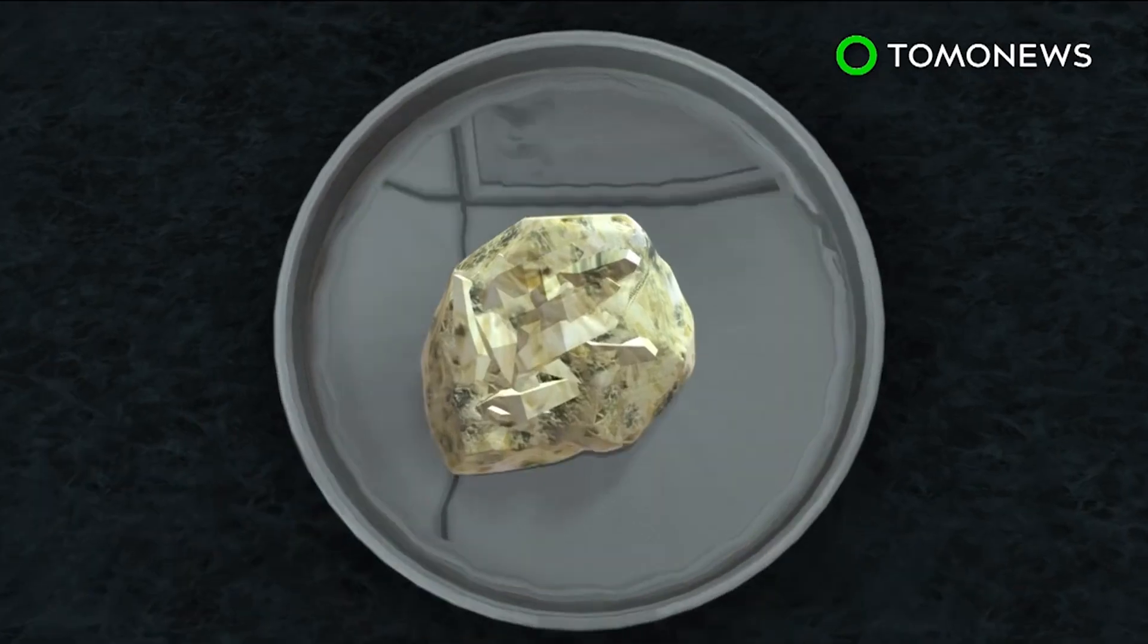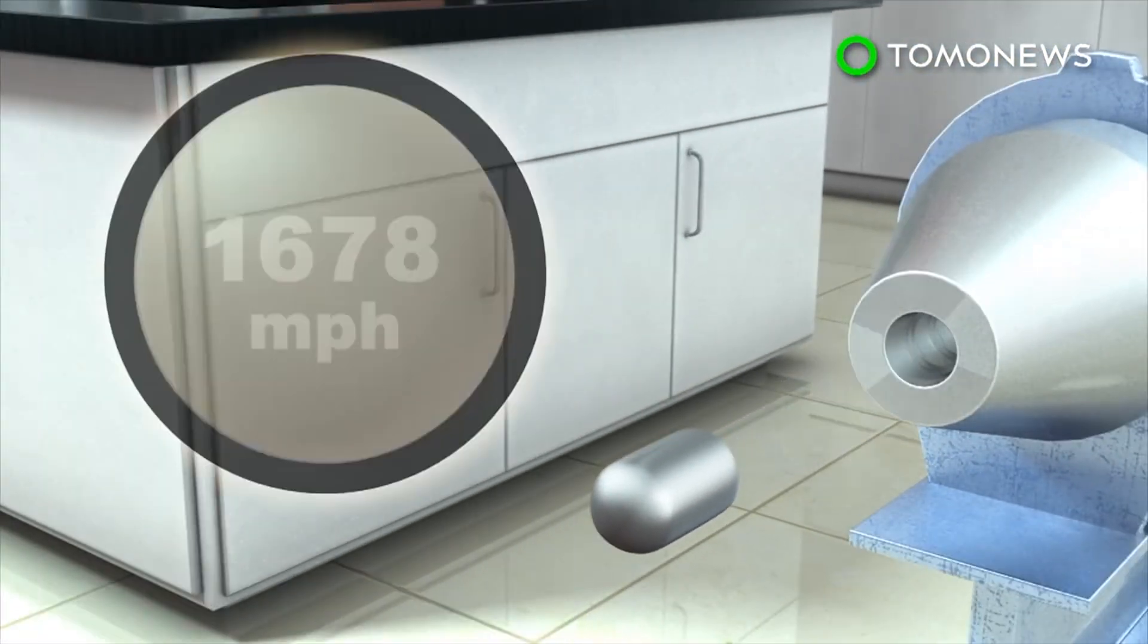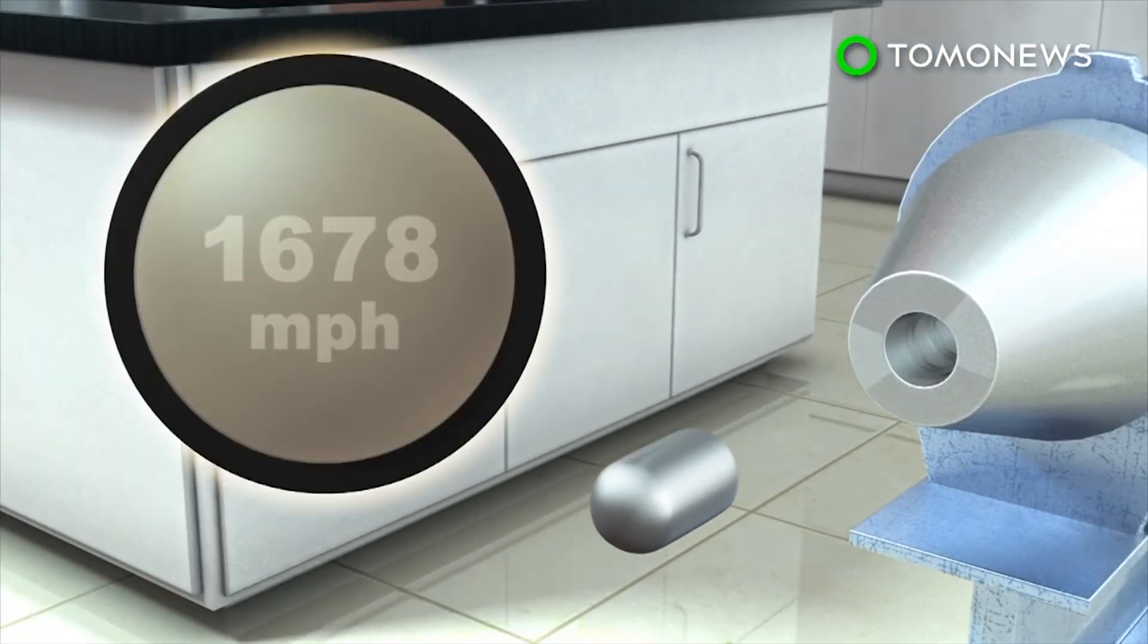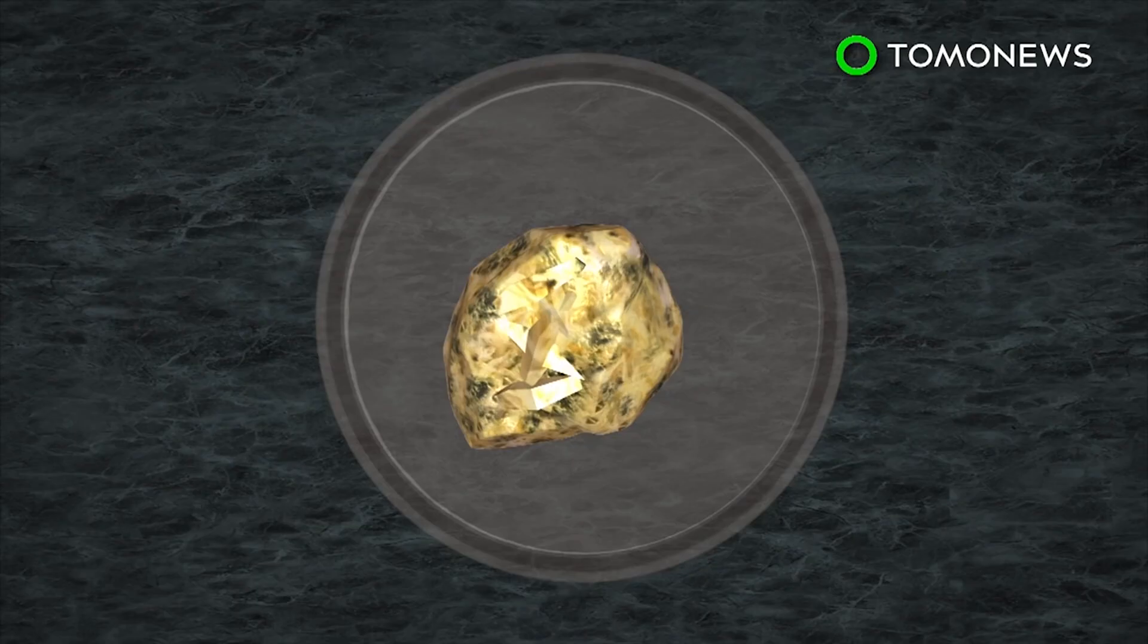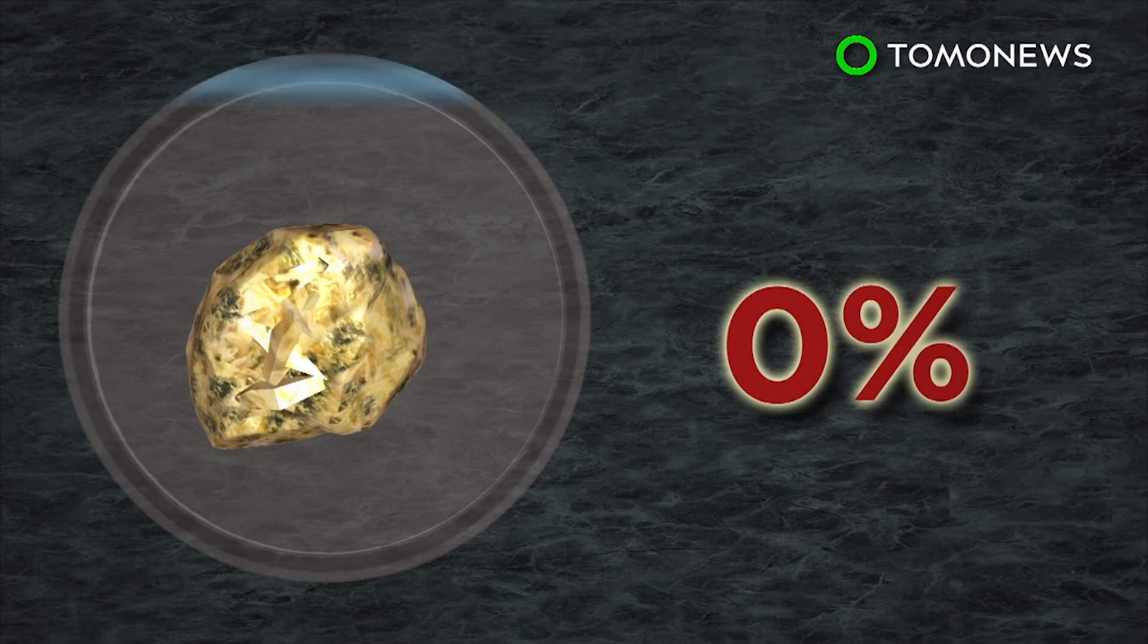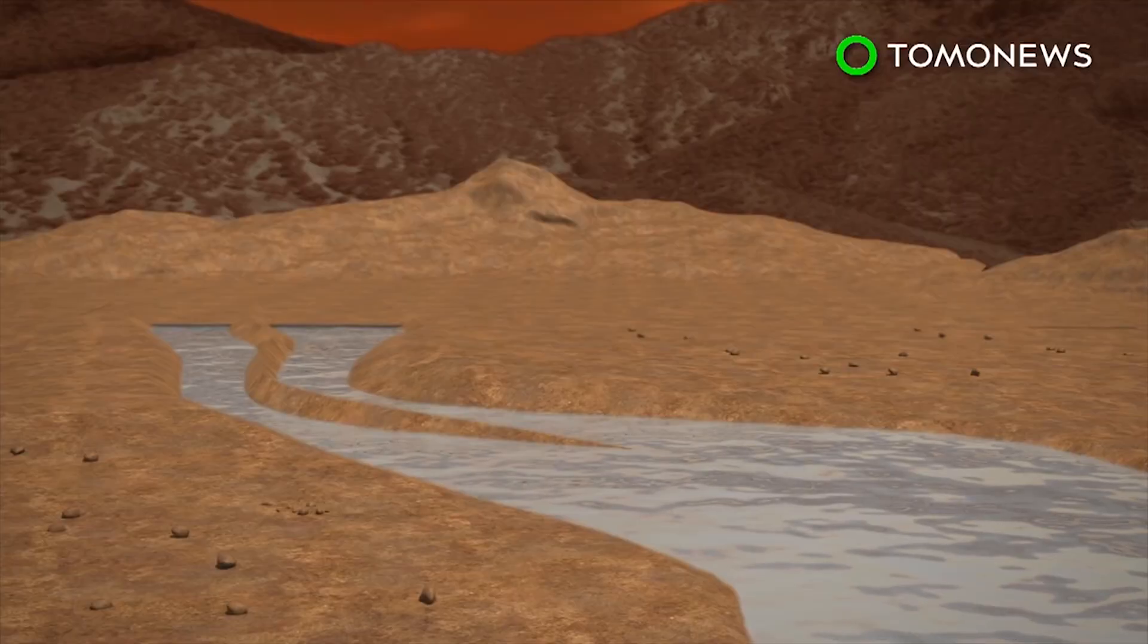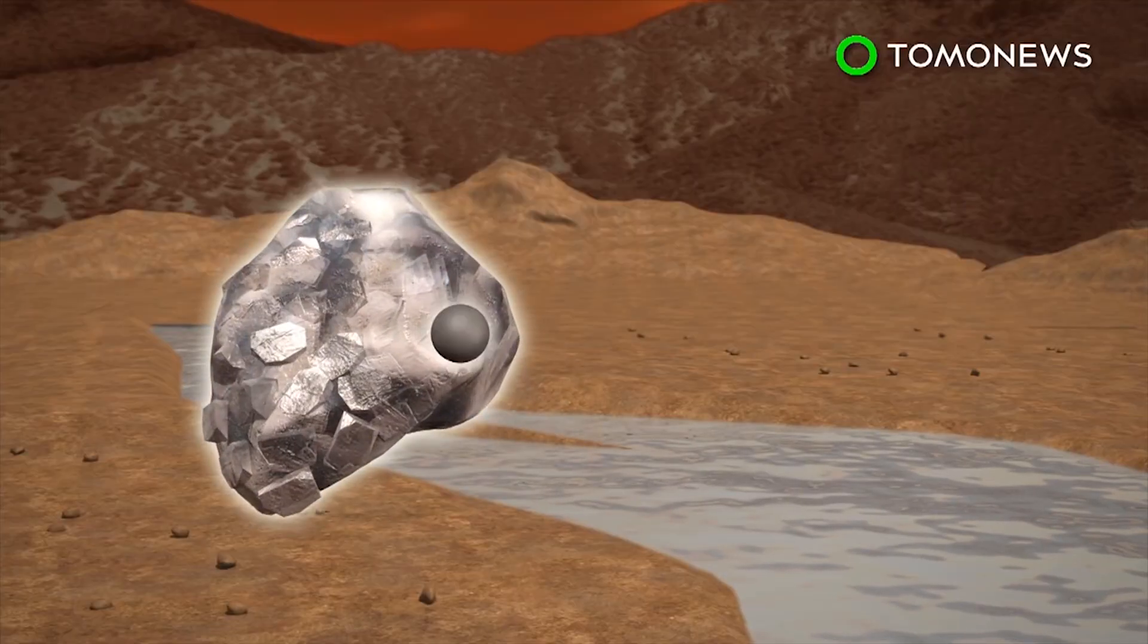They tested the theory by blasting synthetic Whitlocket with a gas-powered gun at speeds of more than 1,600 miles per hour and with huge amounts of pressure. The shock experiments were sustained for only a fraction of a second, but already resulted in partial conversion, with 36% of the mineral transformed to merolite.